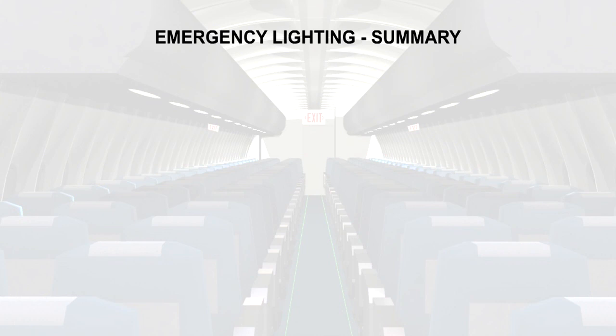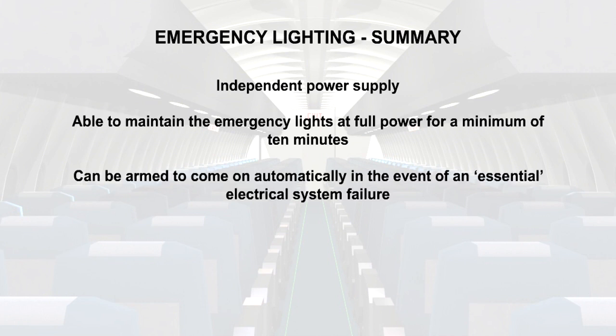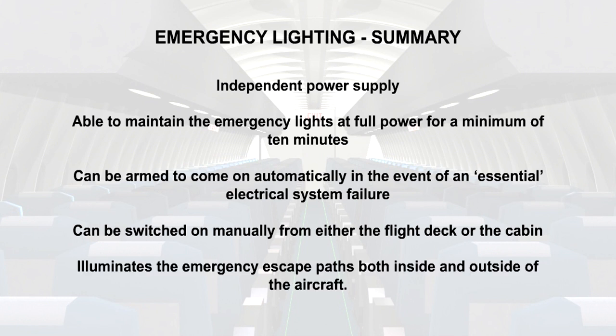That is the end of the lesson. Remember that the emergency lighting system has an independent power supply, which must be able to maintain the emergency lights at full power for a minimum of 10 minutes. The lights can be armed to come on automatically in the event of an essential electrical system failure, or they can be switched on manually from either the flight deck or the cabin. Emergency lights illuminate the emergency escape paths both inside and outside the aircraft.